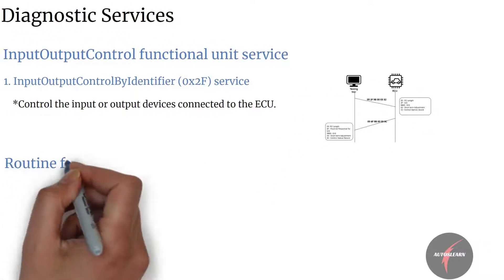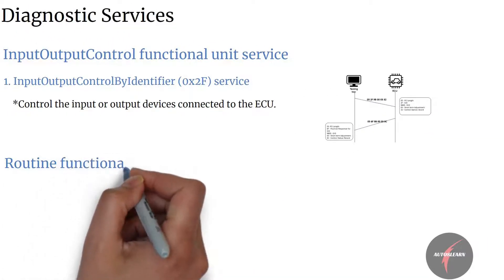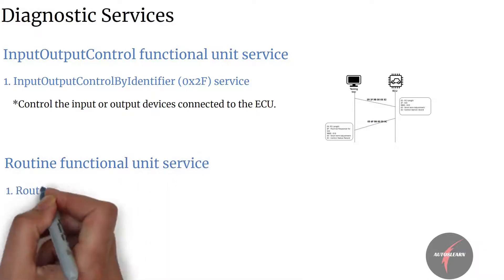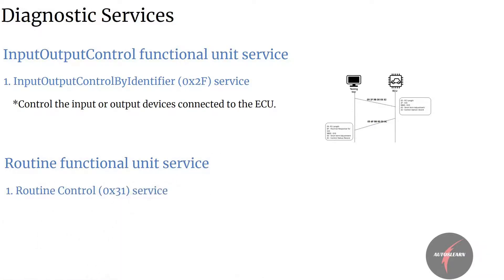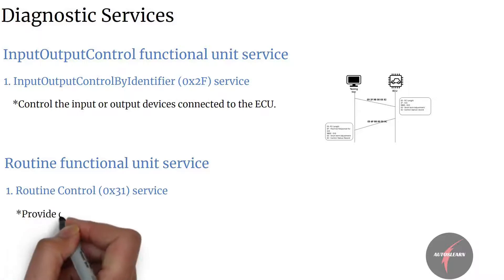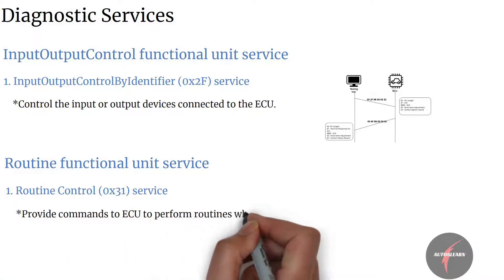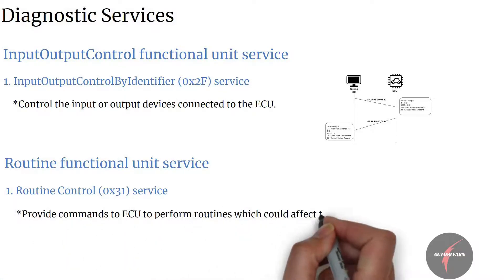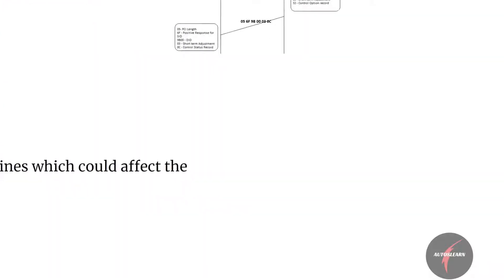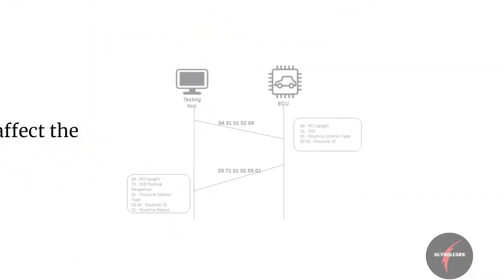Next, we have the routine functional unit service, which comprises of routine control service. This service shall provide commands to the ECU to perform routines, which could affect the functionality of the ECU. Routines are a set of actions that the ECU has to perform to get to a state expected by the tester.